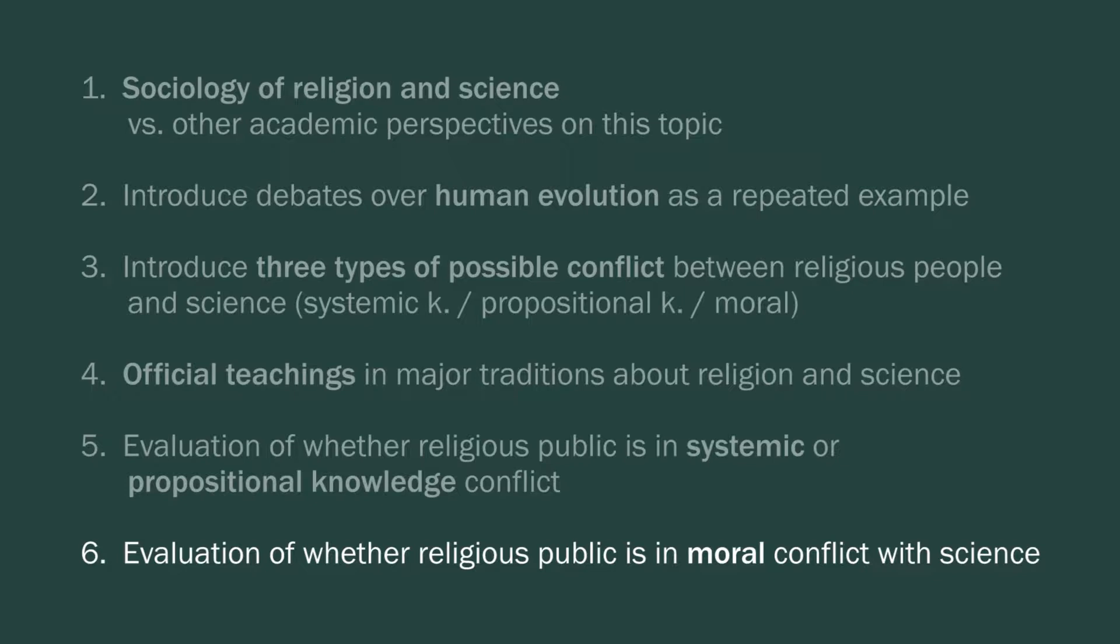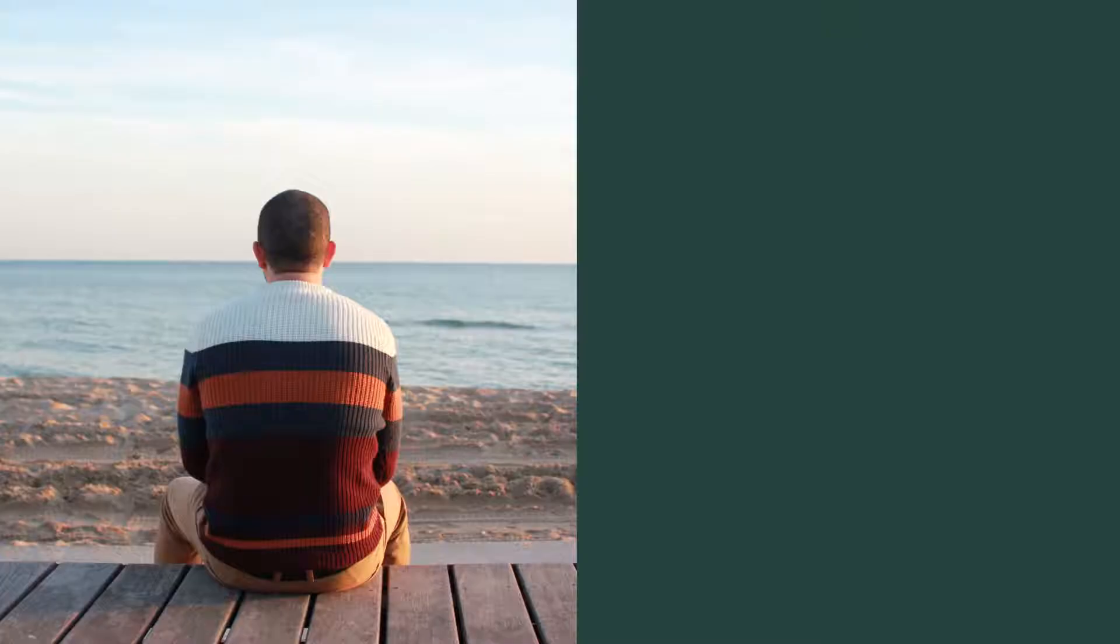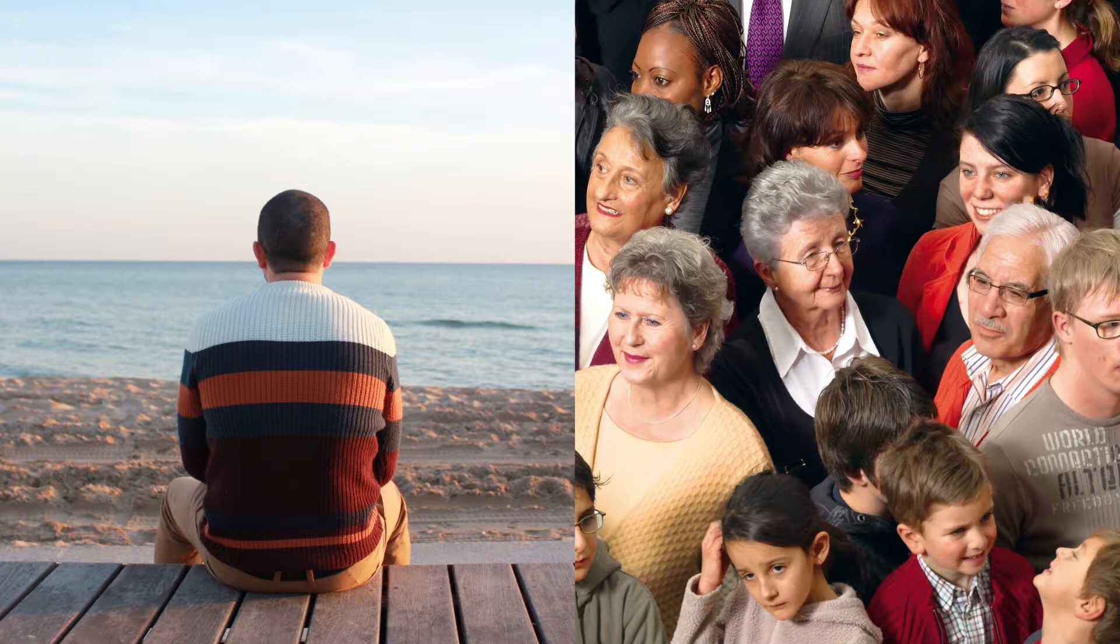So the first obvious question is, I just claimed that I'm a social scientist. What does that actually mean? Social science is the examination of essentially the relationships between people and why people do things. So the best example is to compare to psychology. Psychology looks at individuals and the individual's mindset, things like attitudes and personality. Social science ultimately is about the interactions between people.